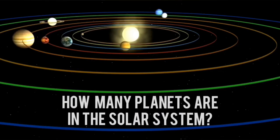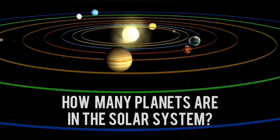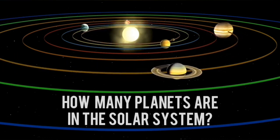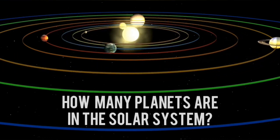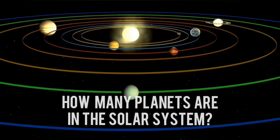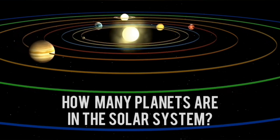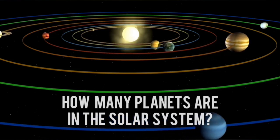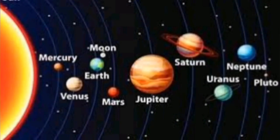But how many planets are there in the solar system? Well, this question is a very hard one because some people will say that there are eight planets. Others will say there are ten or more. But for a very long time, people believed that there are nine planets,